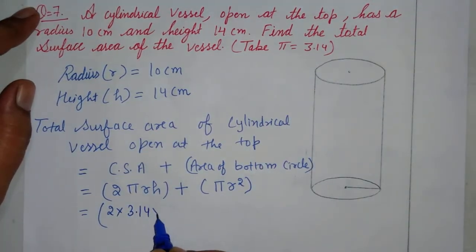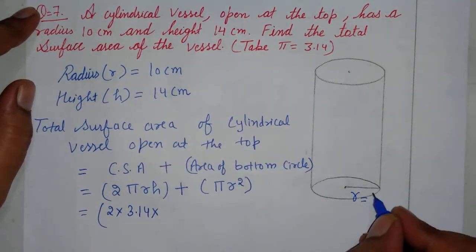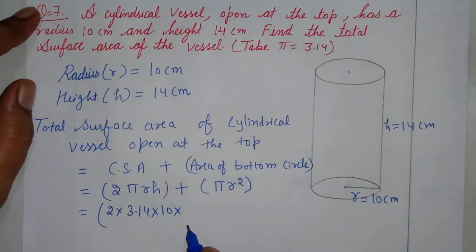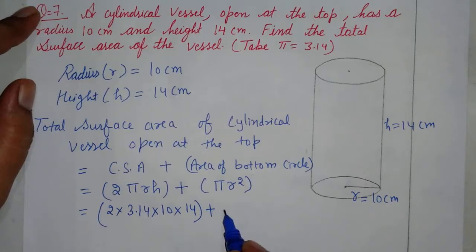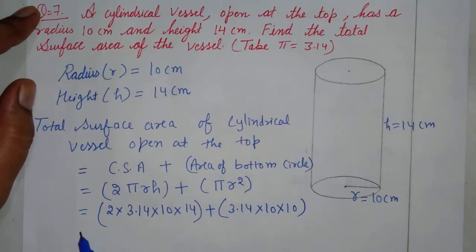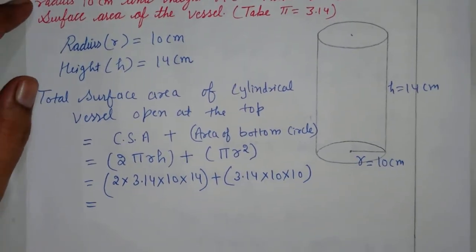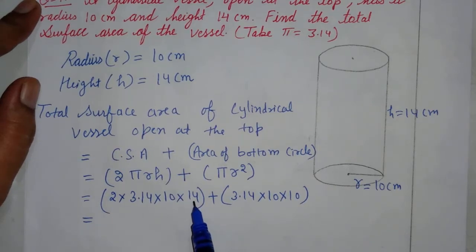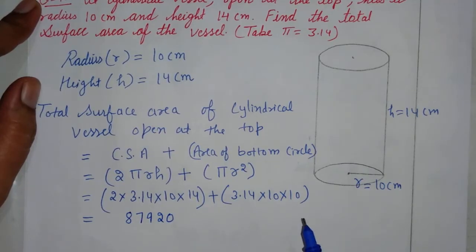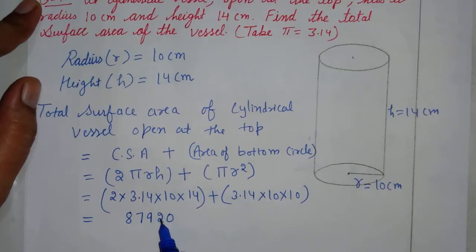Now we substitute: pi equals 3.14, radius equals 10 cm, height equals 14 cm. So: 2 × 3.14 × 10 × 14, plus pi × r² = 3.14 × 10 × 10. For the first part: 2 × 3.14 × 10 × 14. If you multiply it, you get 2 digits after the decimal. Count 2 digits and place the decimal: result is 879.20.